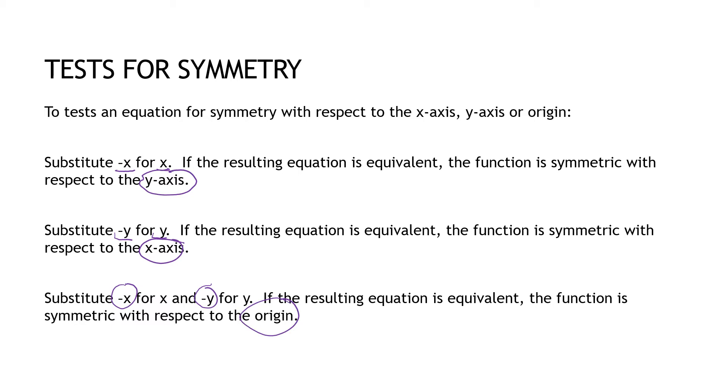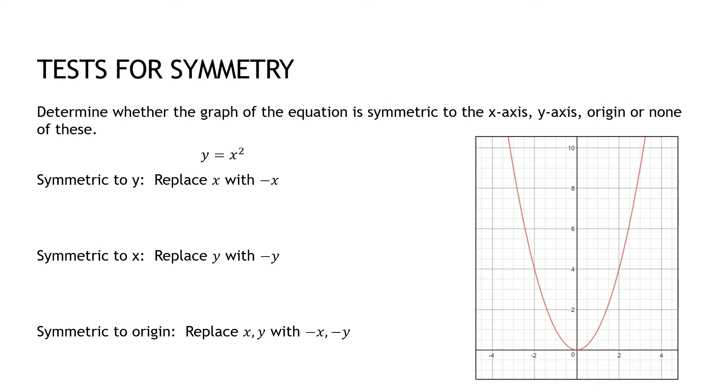So let's take a look at an example. I've already graphed this one for us. I could just graph it and say, hey, look, it looks to be symmetric to the y-axis because this is the y-axis. I can see if I flipped it over the y-axis, the left side would become the right side and the right side would become the left side. But my graph would look exactly the same. So it should be symmetric to the y.